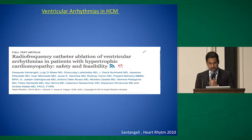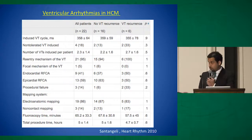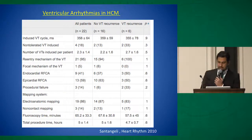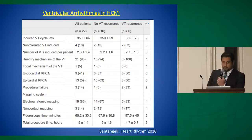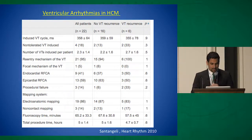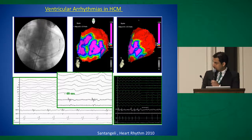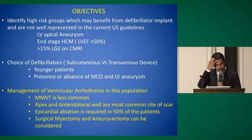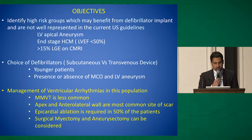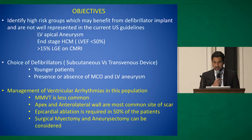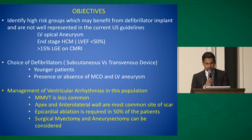The next case series, from Andrea Natale's group, included around 22 patients. Around 50% required an epicardial approach. These are long procedure times — five to six hours — which is expected if you are going epicardial. All arrhythmias don't arise from the apex; this example shows a big basal-lateral scar with a nice mid-diastolic potential that was ablated. Summary for management of ventricular arrhythmias: monomorphic VT is less common; apex and anterolateral wall are the most common sites of scar; be prepared for epicardial ablation as 50% of these patients would require it. Surgical myectomy and aneurysectomy can be considered if transcatheter approach fails.